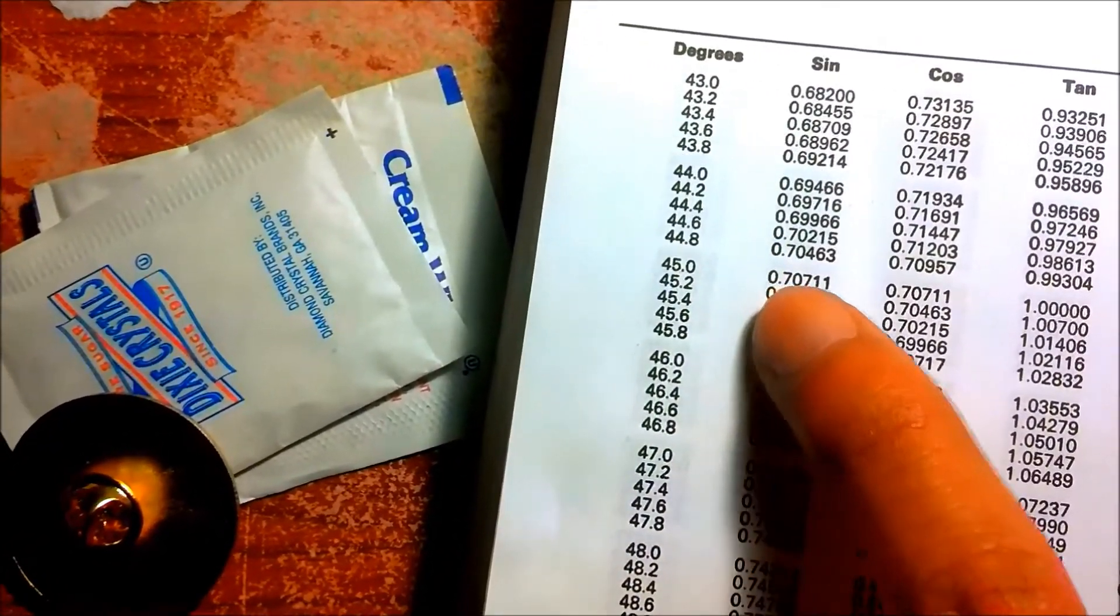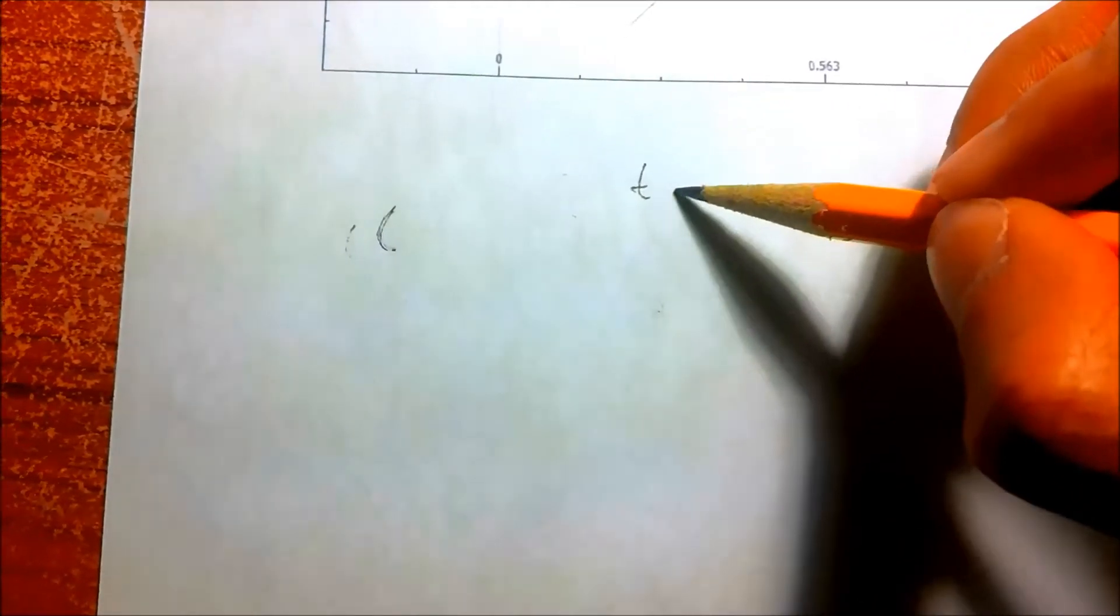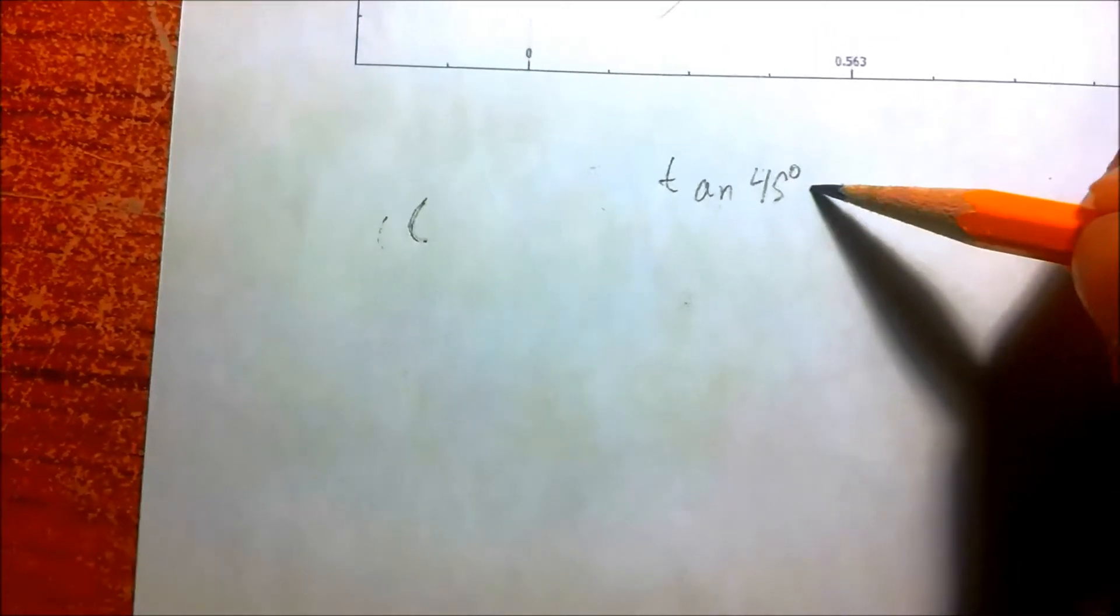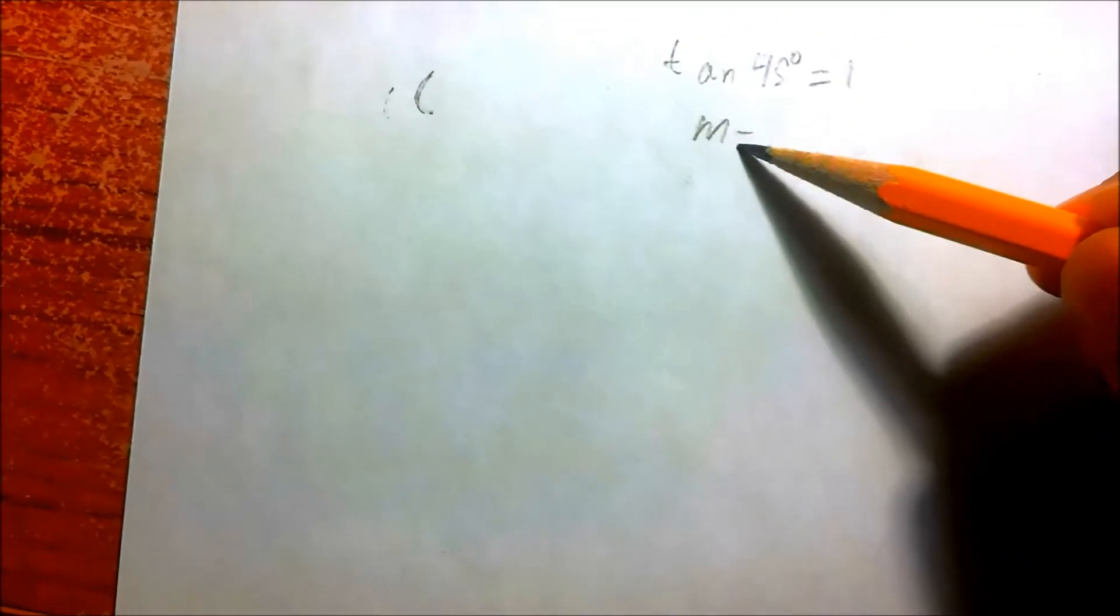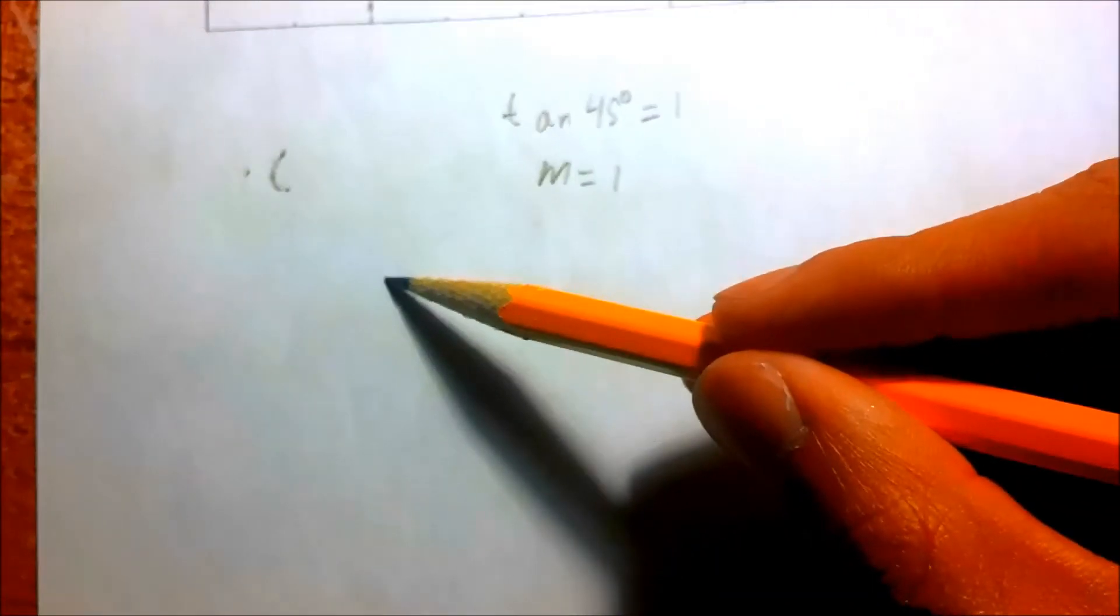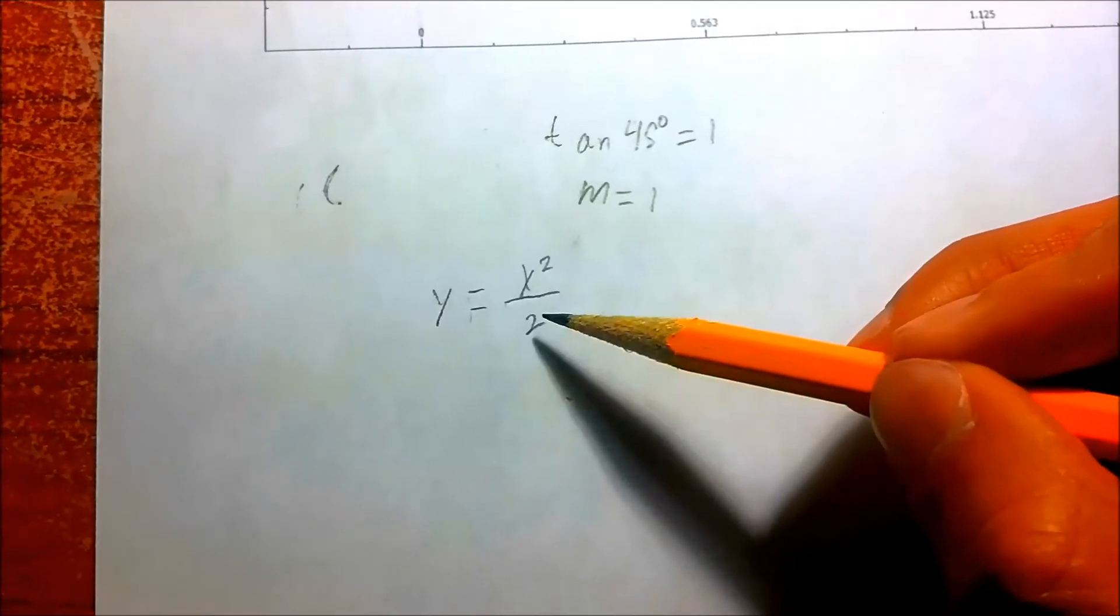And now we go back to our dictionary of mathematics here. So let's look at 45 degrees. Looking at the tangent is 1. So tangent of 45 degrees equals 1. So that means that the slope equals m equals 1.